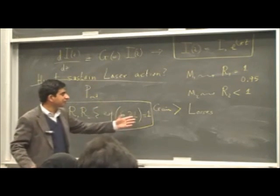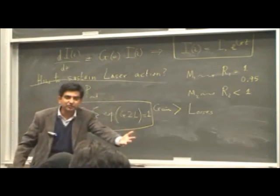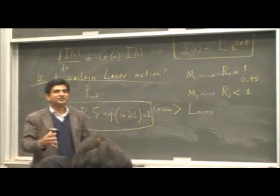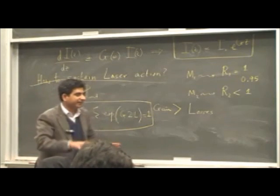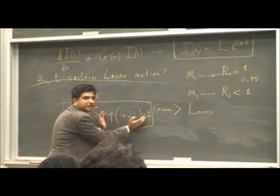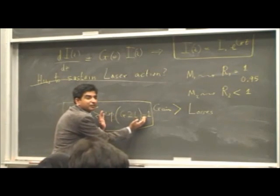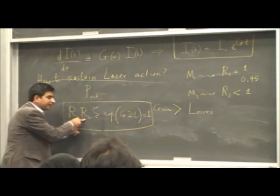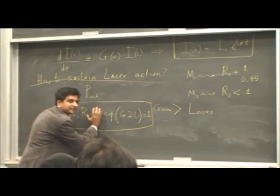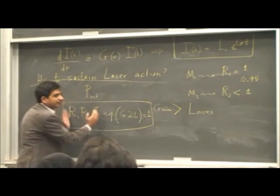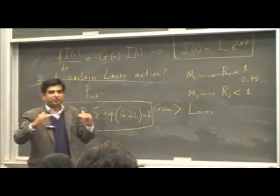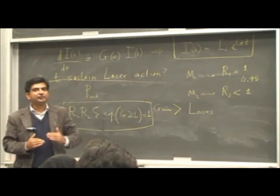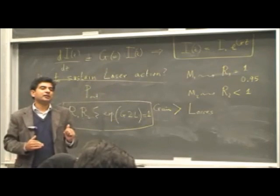If this condition is satisfied such that this product is greater than 1, you will get an output beam. If this product is less than 1, the losses will dominate over the gain. The exponential term is the amplification — it is bigger than 1 — while the mirror reflectivities like 0.95, 0.93, 0.92 are all smaller than 1, representing losses. So for lasing operation, the gain has to cross a certain threshold before lasing can begin.